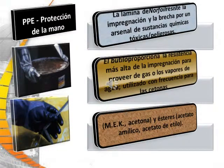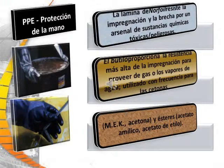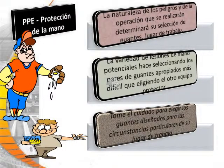Hand protection for personal protective equipment: Norfoil laminates resist permeation and breakthrough by an array of toxic and hazardous chemicals. Butyl provides the highest permeation resistance to gas and water vapors, and is frequently used for ketones such as methyl ethyl ketone, and esters such as amyl acetate and ethyl acetate. The nature of the hazard and the operation to be performed will determine your selection of gloves. The variety of potential hand injuries makes selecting appropriate gloves more difficult than choosing other protective equipment. Take care to choose gloves designed for the particular circumstances of your workplace.